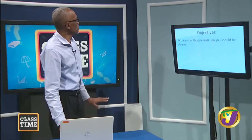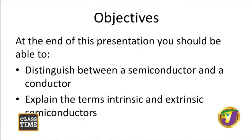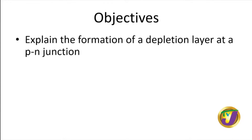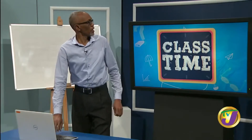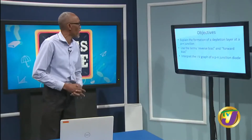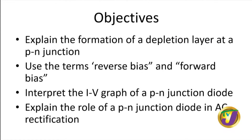At the end of this presentation, you should be able to distinguish between a semiconductor and a conductor, explain the terms intrinsic and extrinsic semiconductors, explain the formation of a depletion layer at a PN junction, use the terms reverse bias and forward bias, interpret the IV graph of a PN junction diode, and explain the role of a PN junction diode in AC rectification. That's one of the uses. It might seem like a bit much, but we'll be able to get through it today.